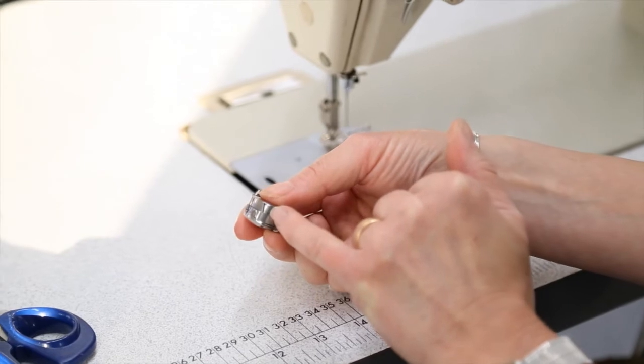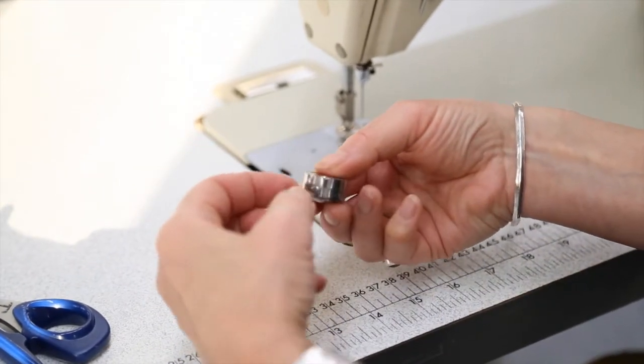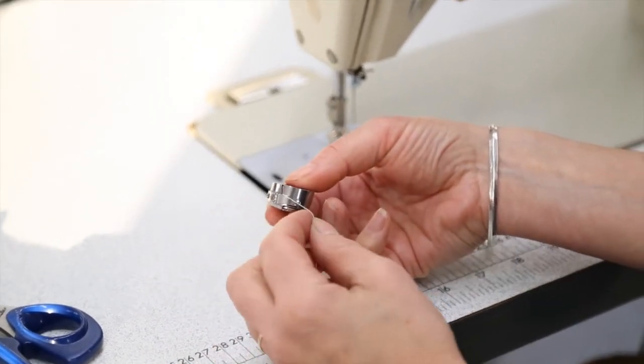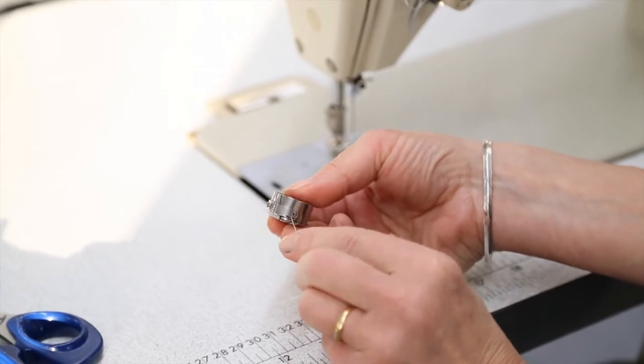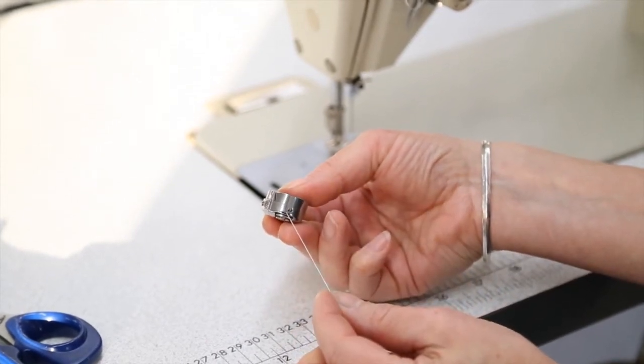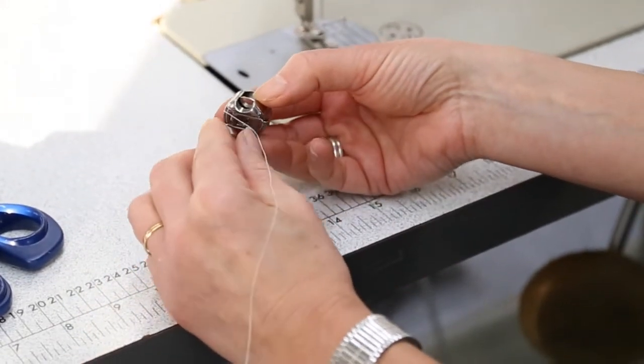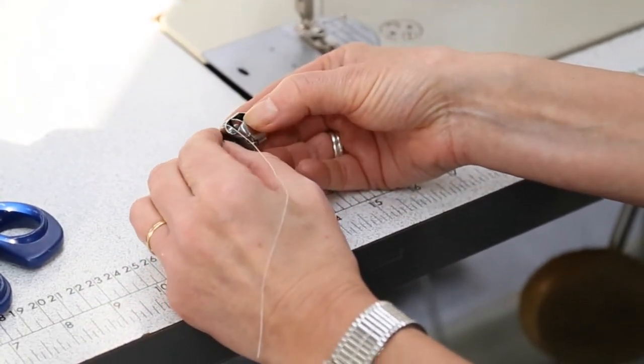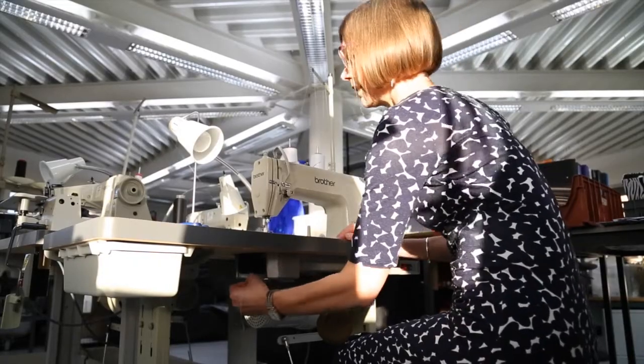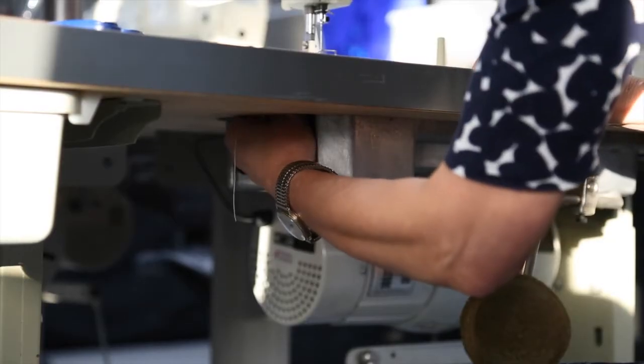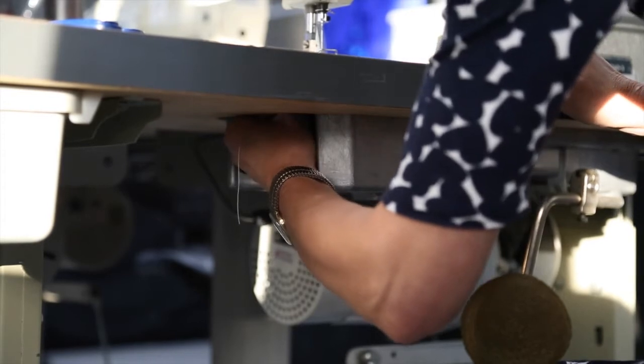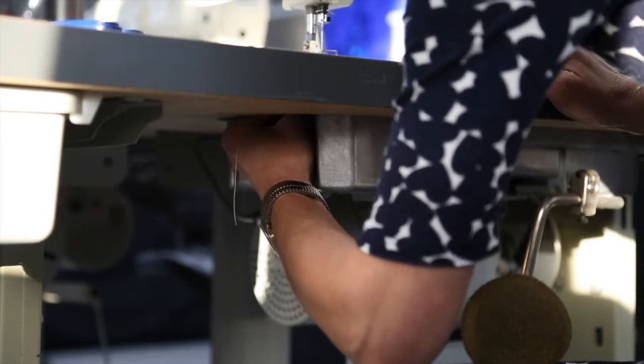There's a notch here and we're going to bring the thread so it slides into the notch and under that tension spring. We'll put the thread over our left hand and hold the latch with our finger and thumb. Then feel for the spoke onto which the bobbin and the case will fit.